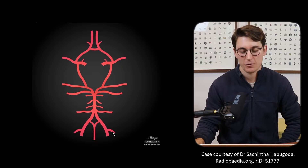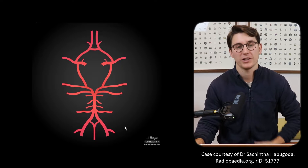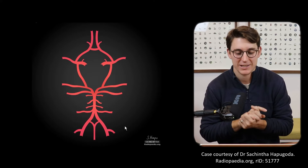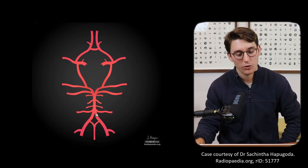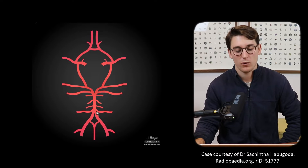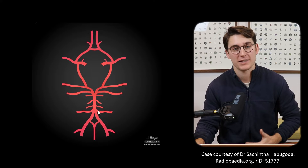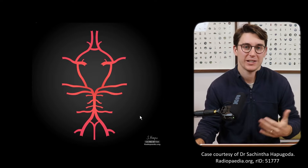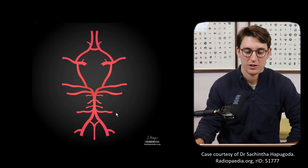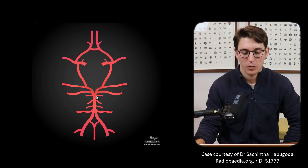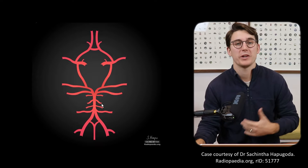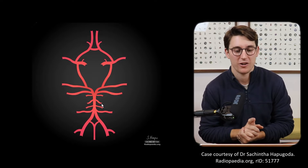The vertebral arteries have a branch coming off called the posterior inferior cerebellar artery, and superior to that, either off the vertebrals or off the base of the basilar artery, will be our anterior inferior cerebellar arteries. As the basilar comes to an end, just before the basilar tip, we get a last branch known as the superior cerebellar artery.